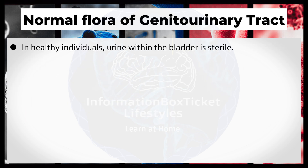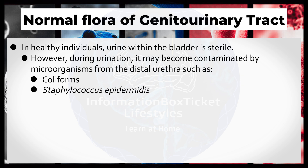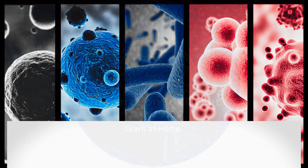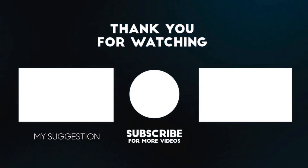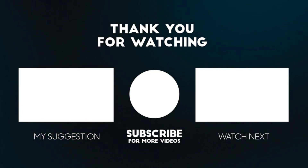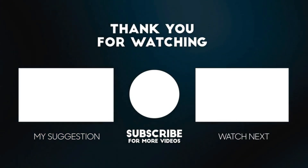In healthy individuals, urine within the bladder is sterile. However, during urination, it may become contaminated by microorganisms from the distal urethra, such as coliforms, Staphylococcus epidermidis, and diphtheroids. The external genital skin may host Staphylococcus saprophyticus, a significant cause of urinary tract infections in women.